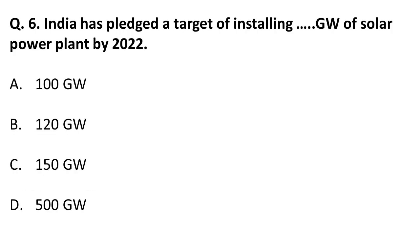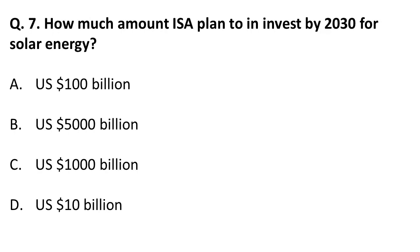India has placed a target of installing how many gigawatts of solar power by 2022? Under the International Solar Alliance, India has set a target of installing 100 gigawatts of solar power by 2022. Remember — 100 gigawatts is the target India has set.